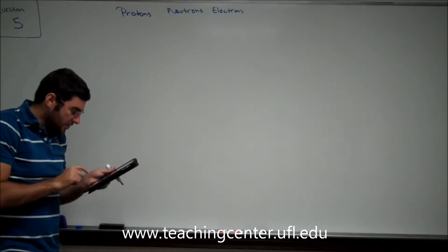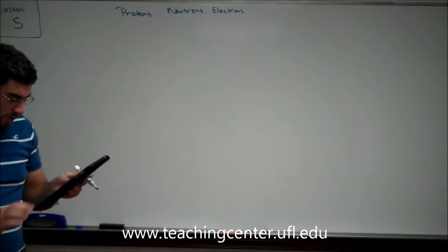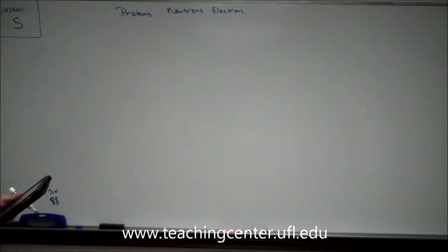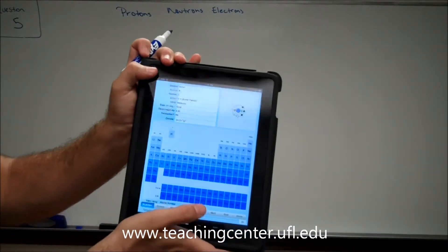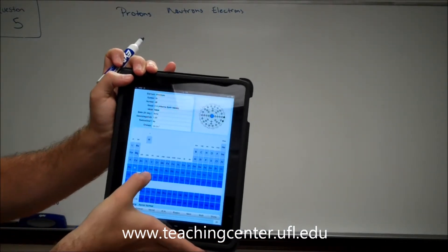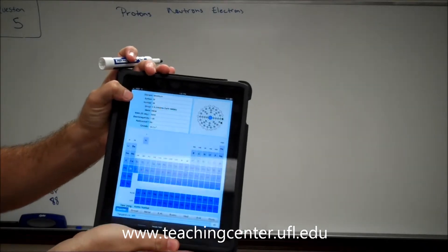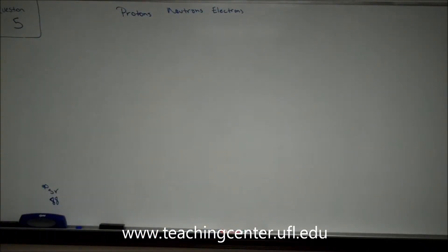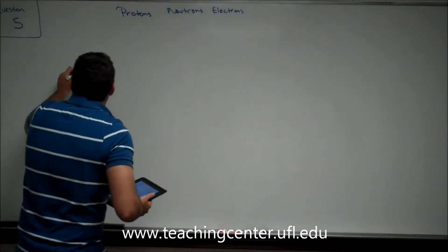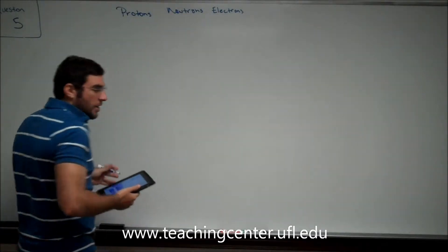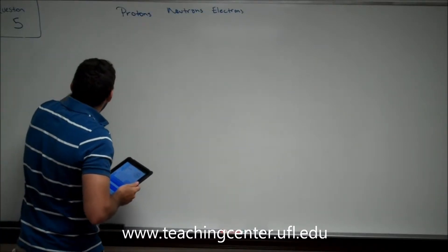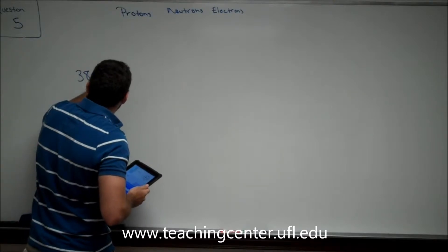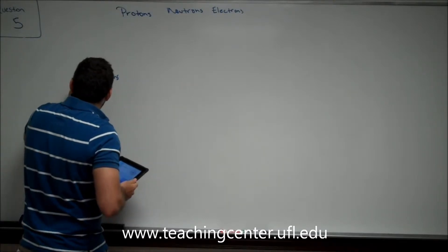If we go to our periodic tables, we can see that strontium falls in the category of the alkaline earth metals, and it has an atomic number of 38. So when we see the 38, we know that in a regular form of the element, not an ion, it would typically have 38 protons and 38 electrons.